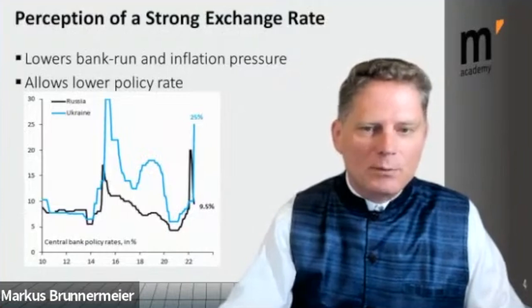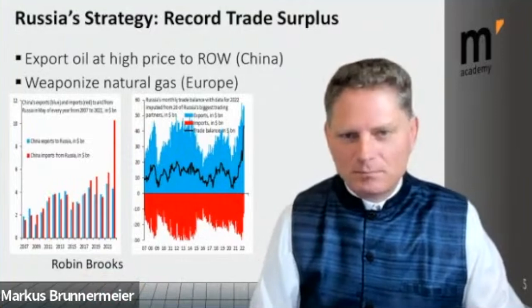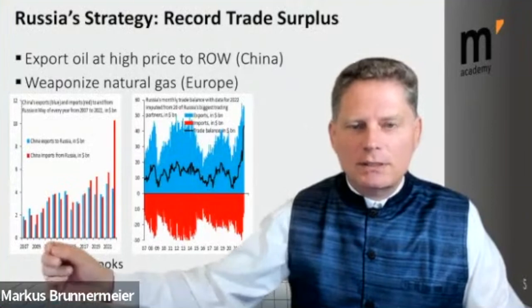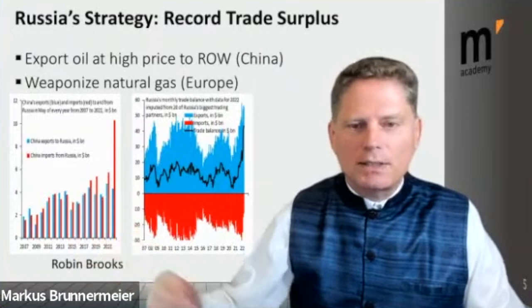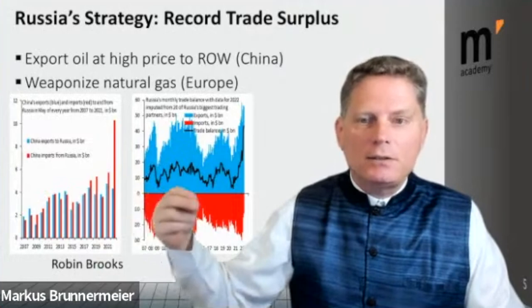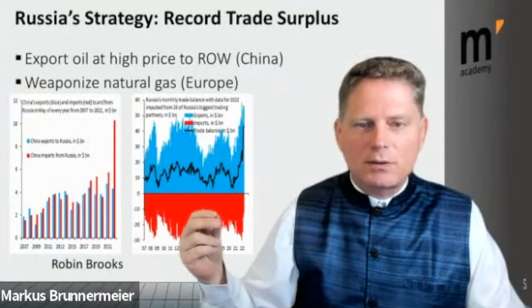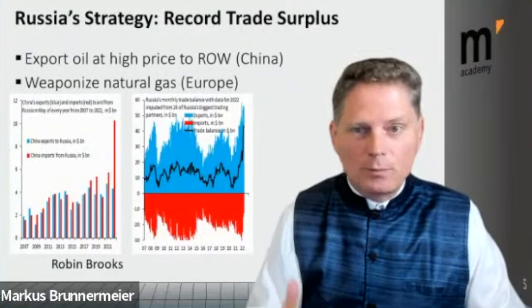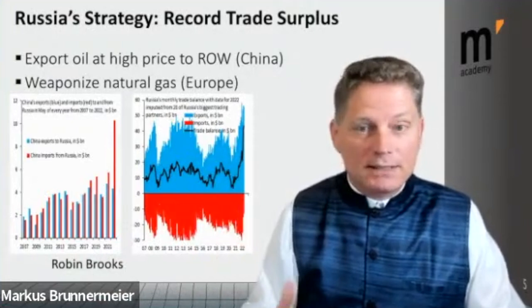A few words about the Russian strategy that led to a record trade surplus — taken from Robin Brooks' Twitter feed. Russia is exporting oil at very high prices, particularly to China, where exports increased dramatically compared to previous years. Export dollar value is going through the roof because oil prices are so high. Meanwhile imports went down due to trade sanctions, pushing Russia's total trade surplus up significantly.